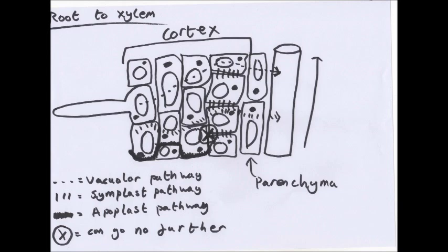Now we look at transport of water from the root to the xylem. Water needs to get from the soil into the root and into the xylem to be transported around the plant. Root cells have very long tips with many hairs for a large surface area. Water is drawn into the roots down the water potential gradient — water always moves from high water potential to low water potential. The soil generally has high water potential while leaves have low water potential because water has evaporated from them, creating a water potential gradient.